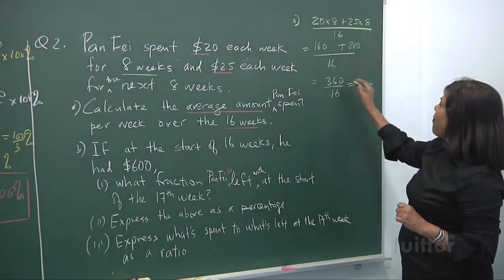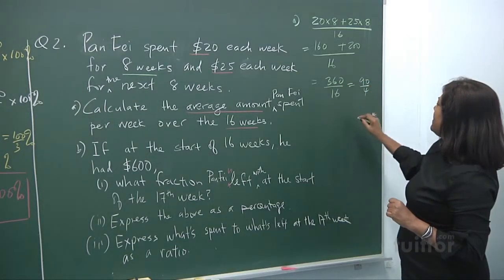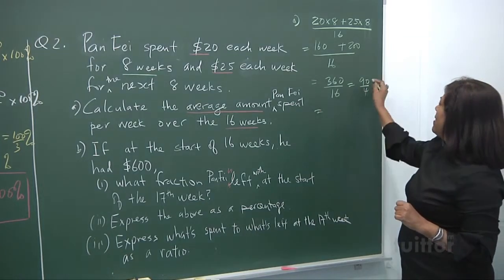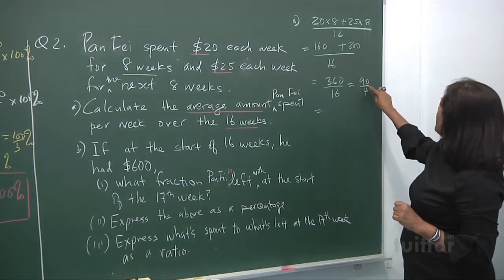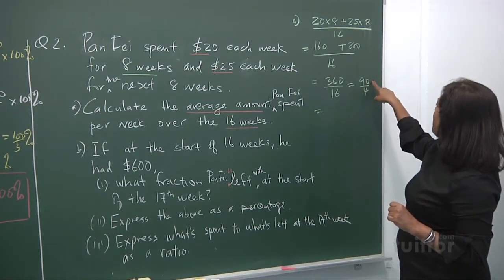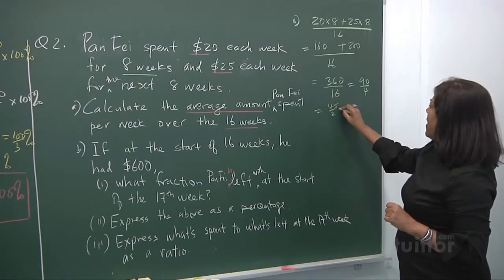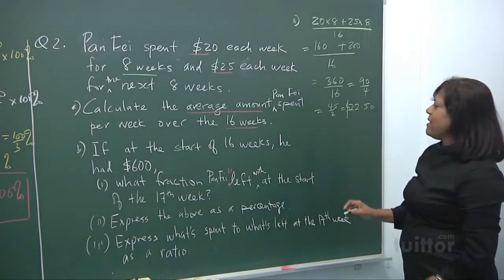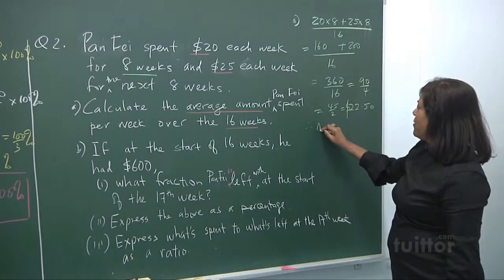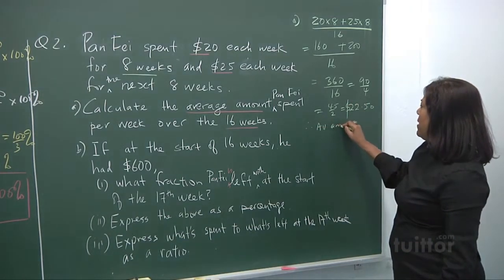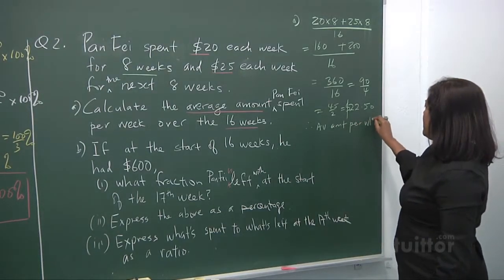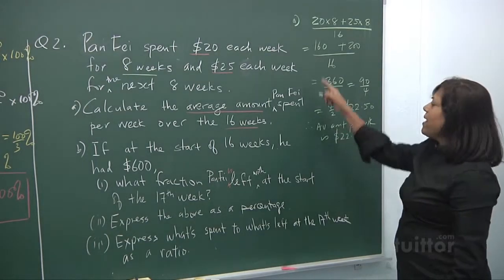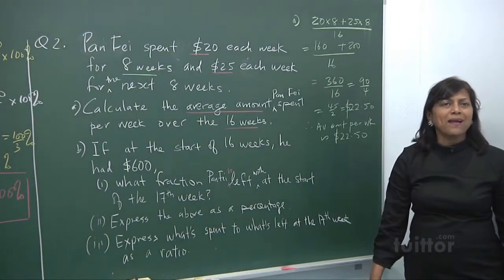Let's divide by 4. You get 90. Here's 90 and here is 4. Divide again. You get 45 over 2, and that gives you 22 dollars and 50 cents. Therefore, the average amount per week is 22 dollars and 50 cents. That answers question part A.